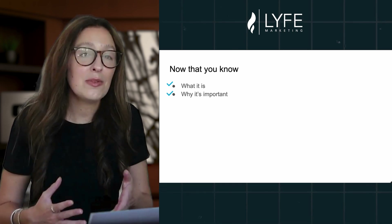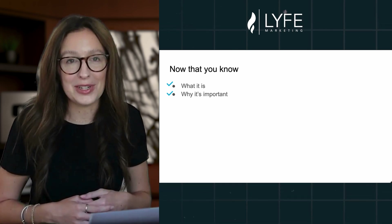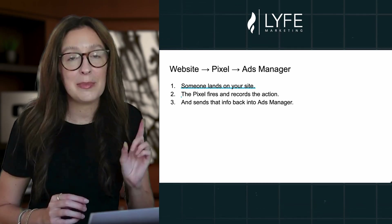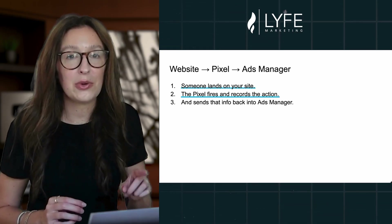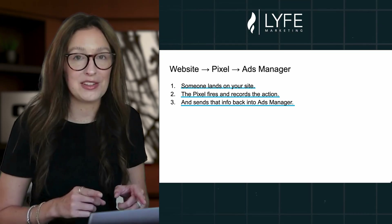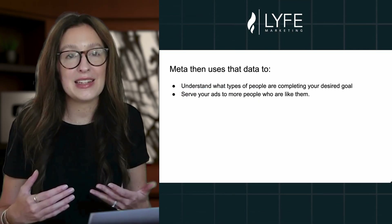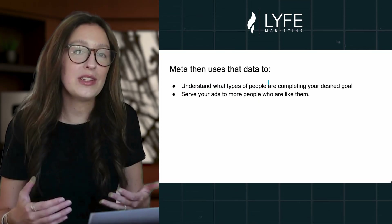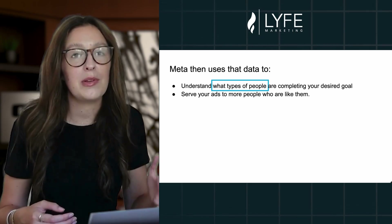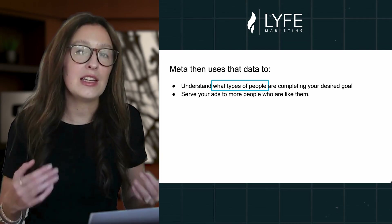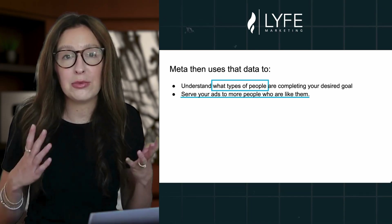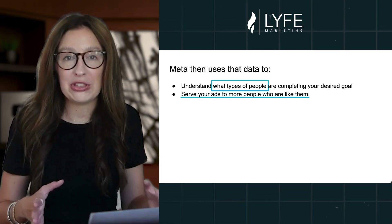So now that you know what the Meta Pixel is and why it's important, let's talk about how it works. Here's the workflow: someone lands on your site, the pixel fires and records the action and sends that info back into Ads Manager. Meta then uses that data to understand what types of people are completing your desired goal — whether that's product sales on your site, lead form completions, or what have you — and then serves your ad to more people who are just like them.